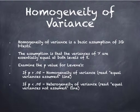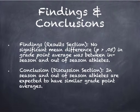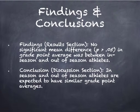If that p-value is less than .05, heterogeneity of variance occurs and you read the equal variances not assumed line. In this example, the SIG was greater than .05, so no significant mean difference in GPA was found between in-season and out-of-season athletes. This goes in the results section. In the conclusion section, you remove the statistical jargon and write: in-season and out-of-season athletes are expected to have similar grade point averages.